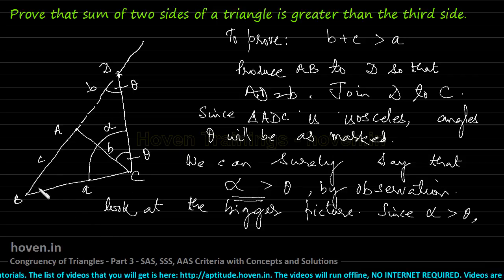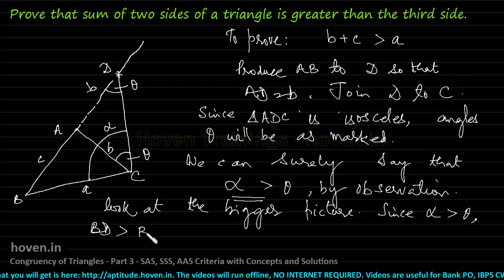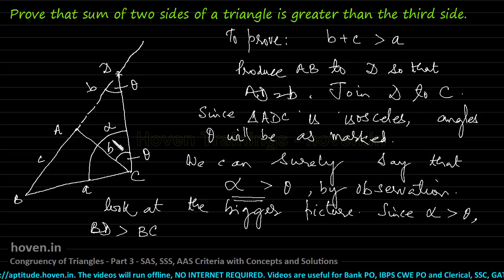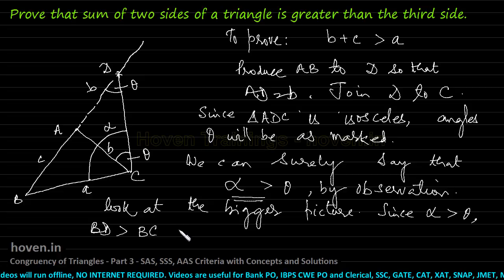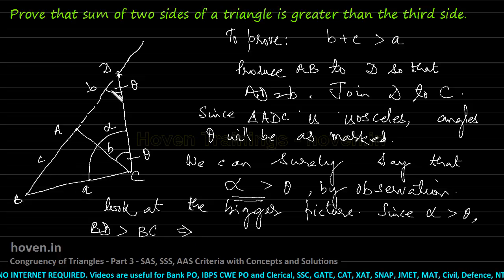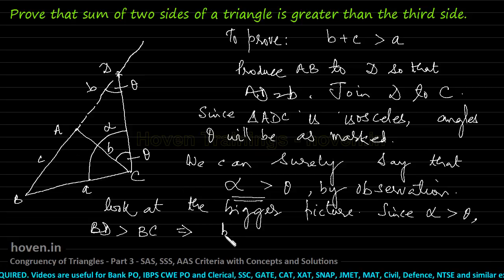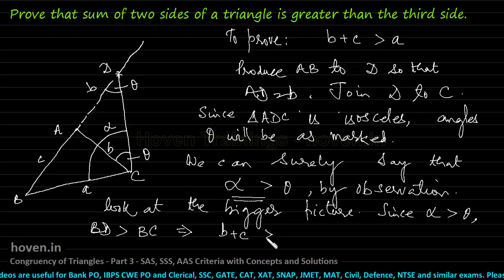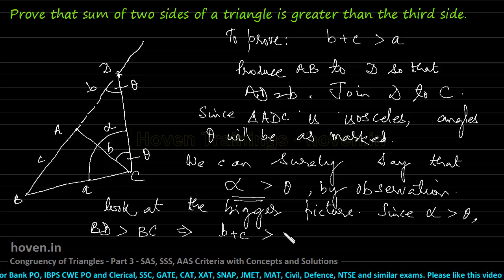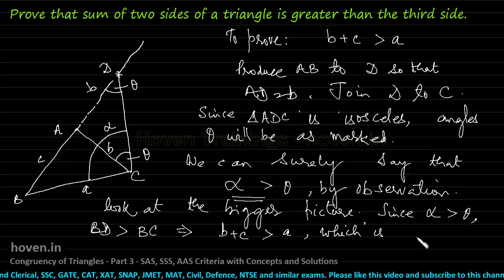So BD should be greater than BC, because BD is opposite to angle alpha and BC is opposite to angle theta. Which implies: what is BD? BD is the same as B plus C, which should be more than BC. And BC is marked as A. So this is what we wanted to prove — which is exactly what has been proved.